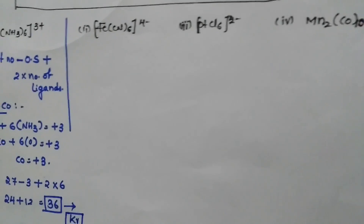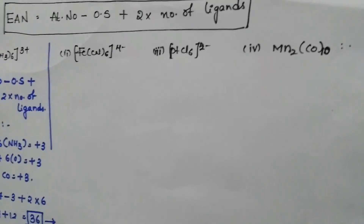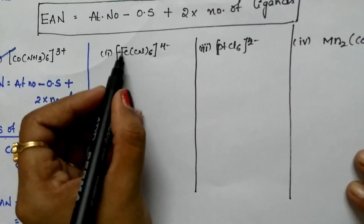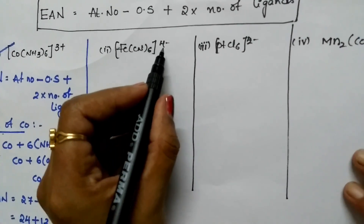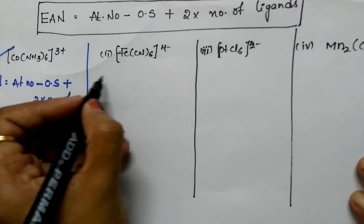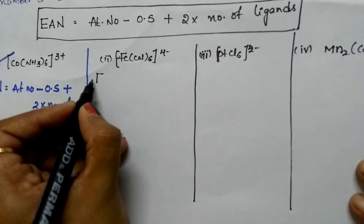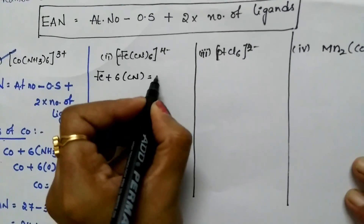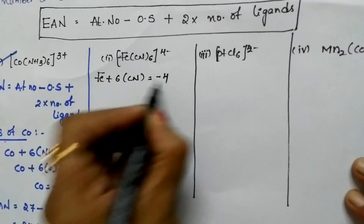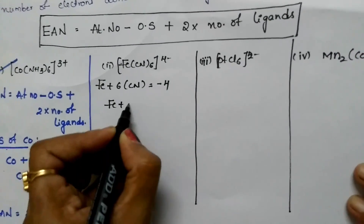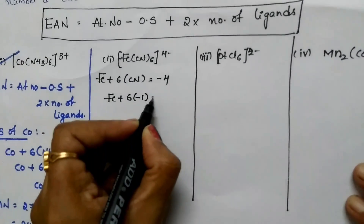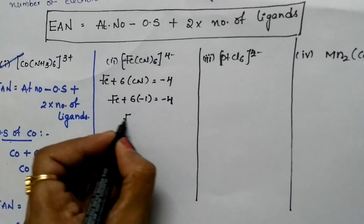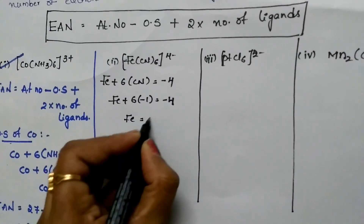Let us see the second example. First, find the oxidation state of iron in Fe(CN)6⁴⁻. Fe + 6×(−1) = −4. Cyanide ion has oxidation state −1, so Fe − 6 = −4, therefore iron's oxidation state is +2.